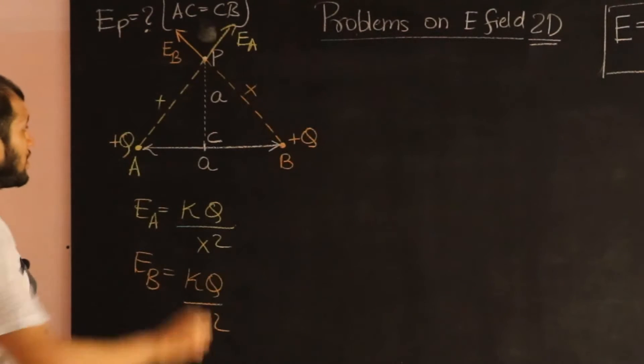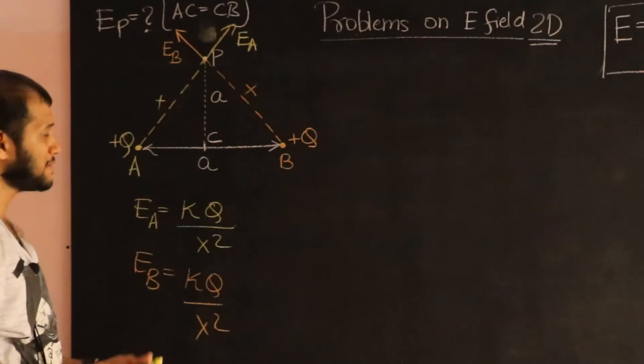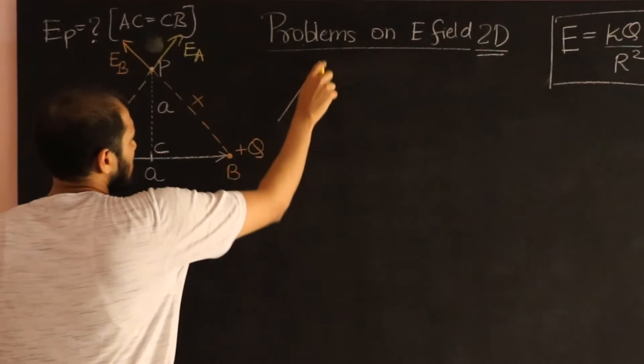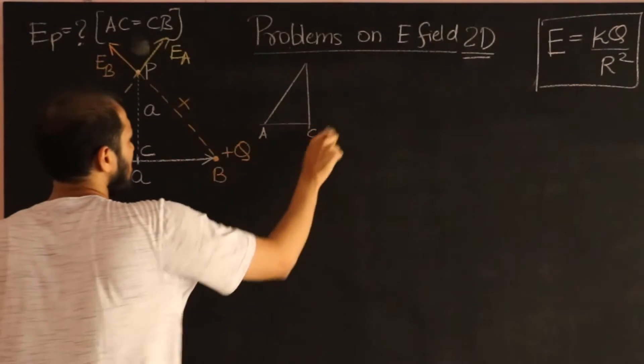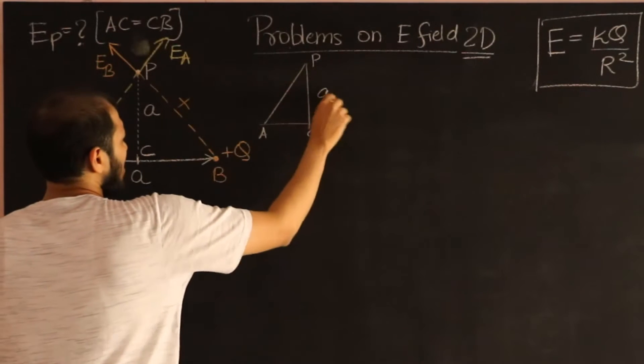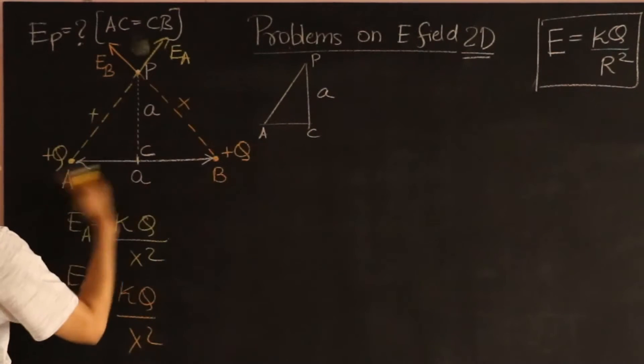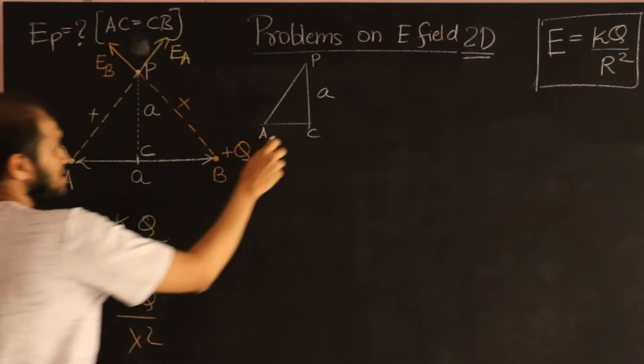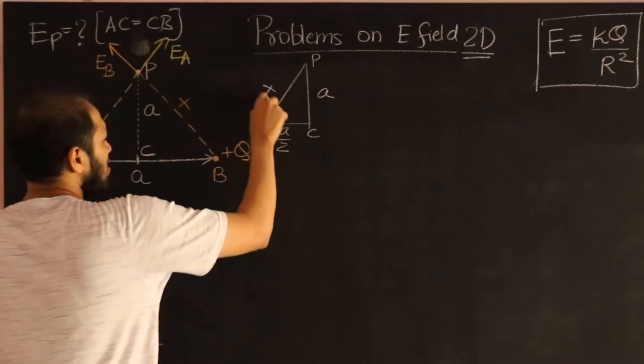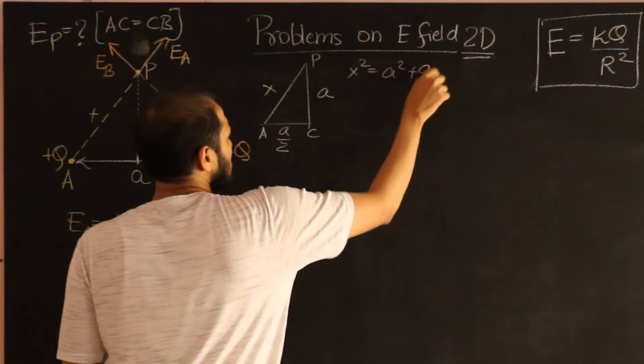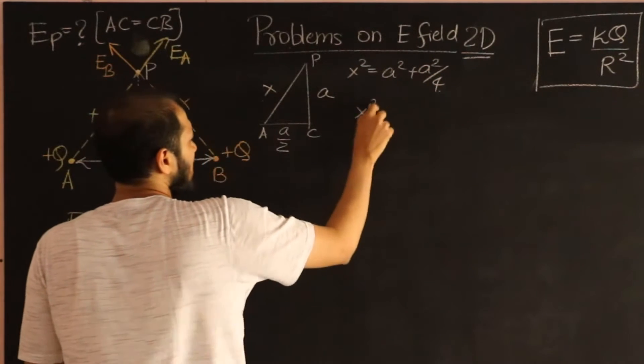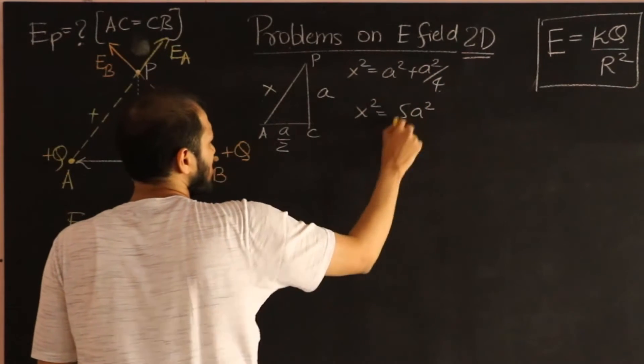Before we go any forward, let's calculate what that X squared is. To do that, let's look at the small triangle that we have. We have a triangle ACP. This is A, and AC is half of AB, and AB is A. So it's A by 2. So, Pythagoras tells us, X squared should be equal to A squared plus A squared by 4.